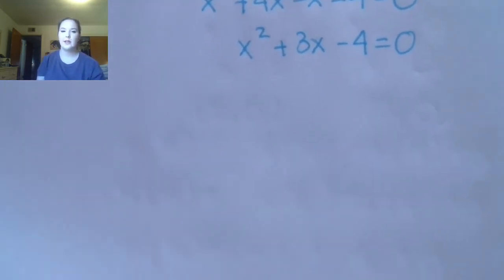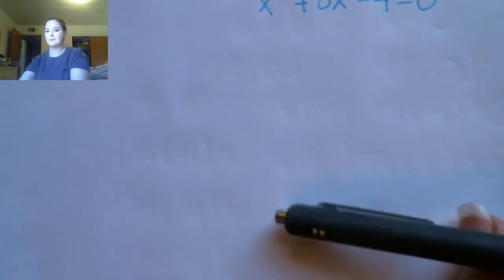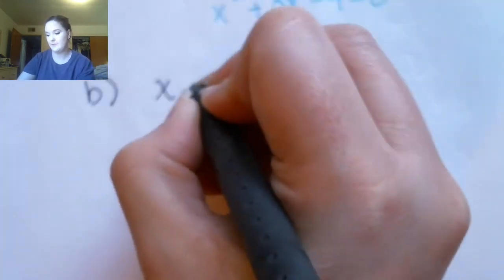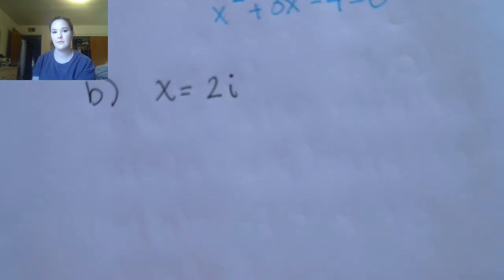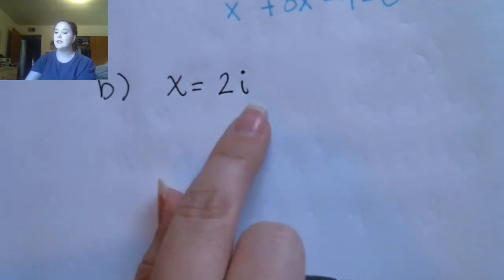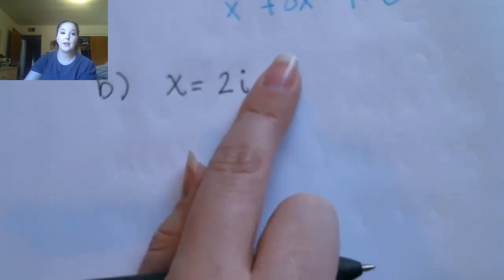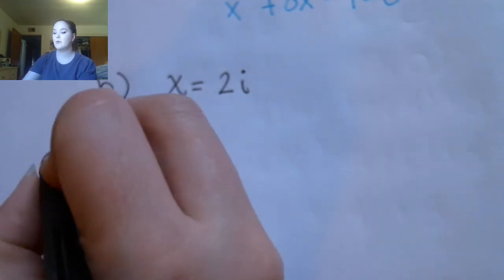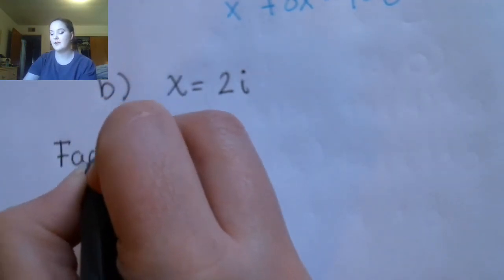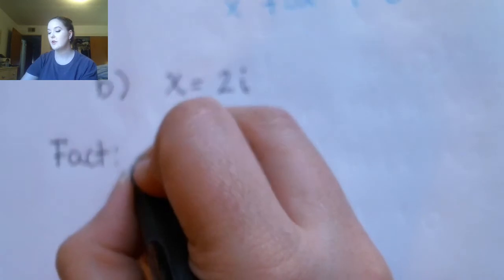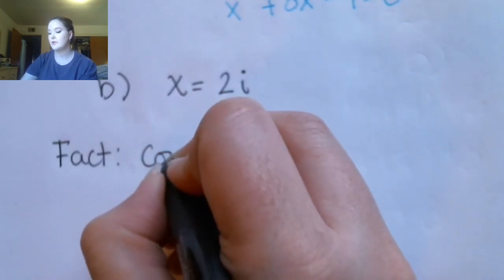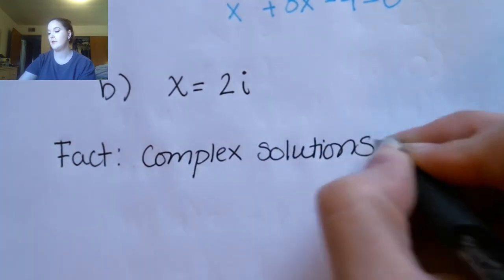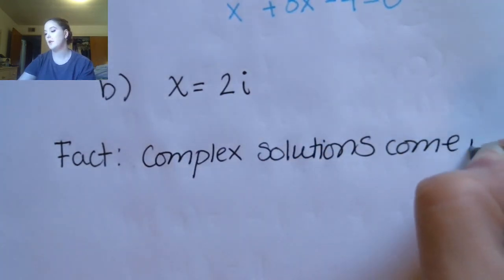What if we had different types of solutions? This is an imaginary number, so we would say this equation has a complex solution. To solve this one, we need to know that complex solutions come in conjugate pairs.